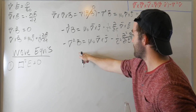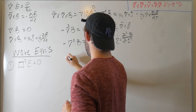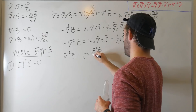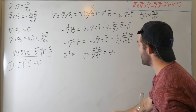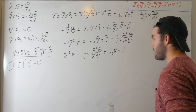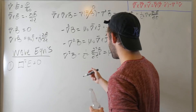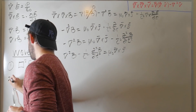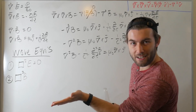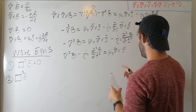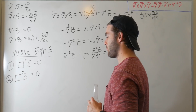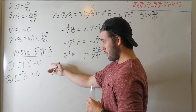Collecting terms, we get del-squared B minus one over c-squared times d²B/dt² equals mu-naught del-cross-J. Defining the D'Alembertian acting on B, we get the second wave equation: box-squared B equals mu-naught del-cross-J. And if we say there are no charges moving around, this goes to zero, giving us box-squared B equals zero. And there we have it — Maxwell's wave equations in terms of the D'Alembertian operator, where there are no charges moving around.